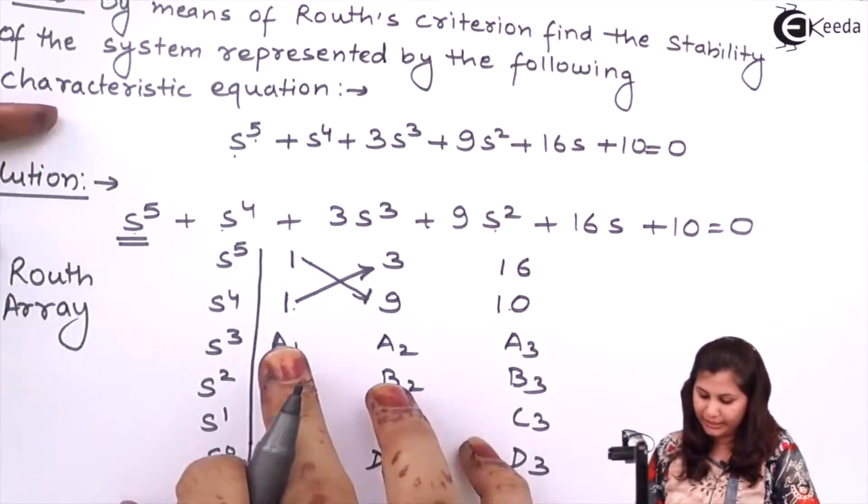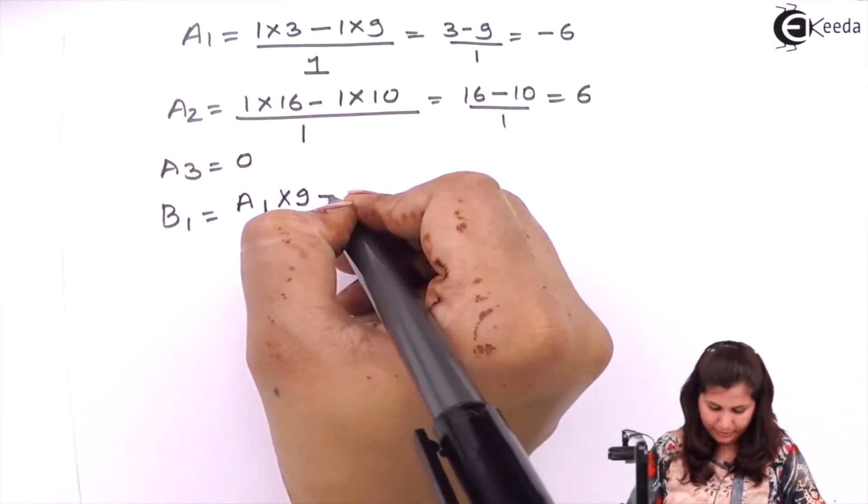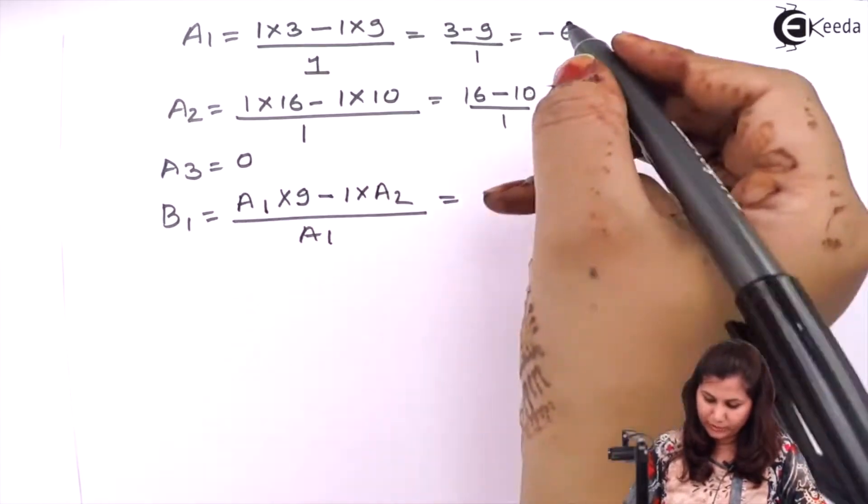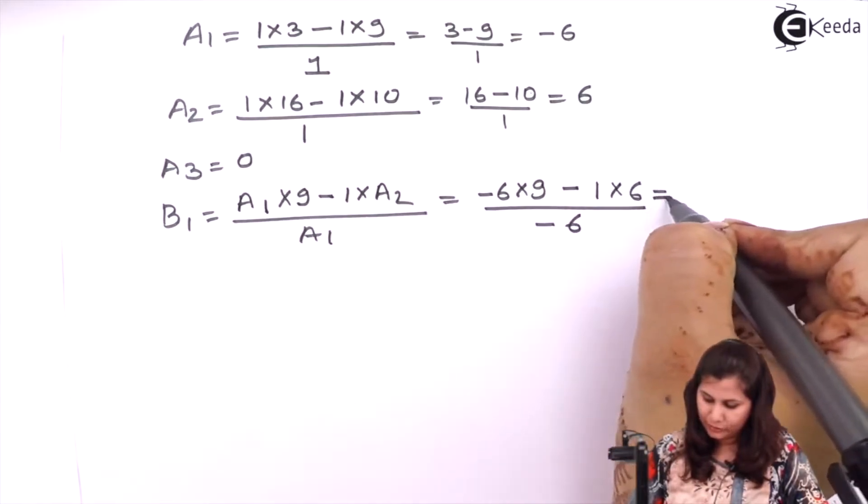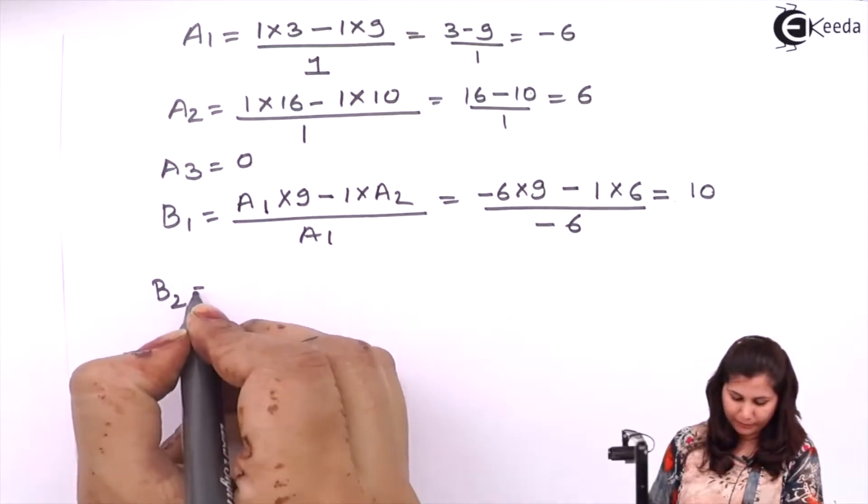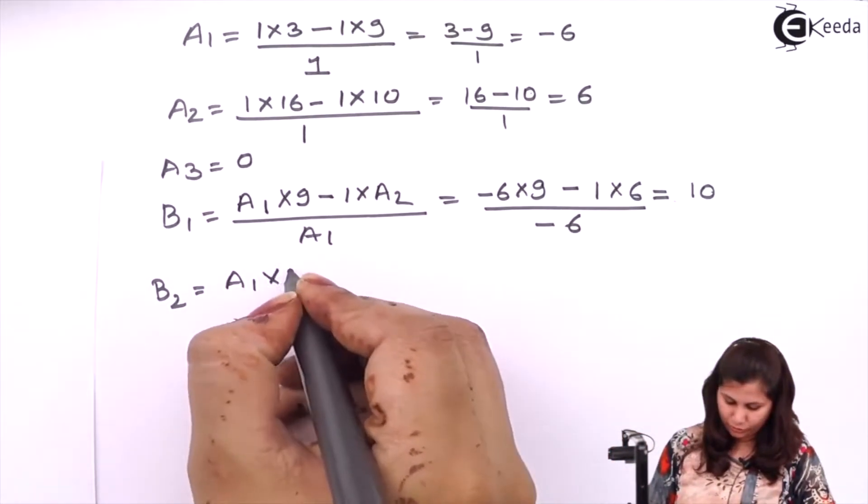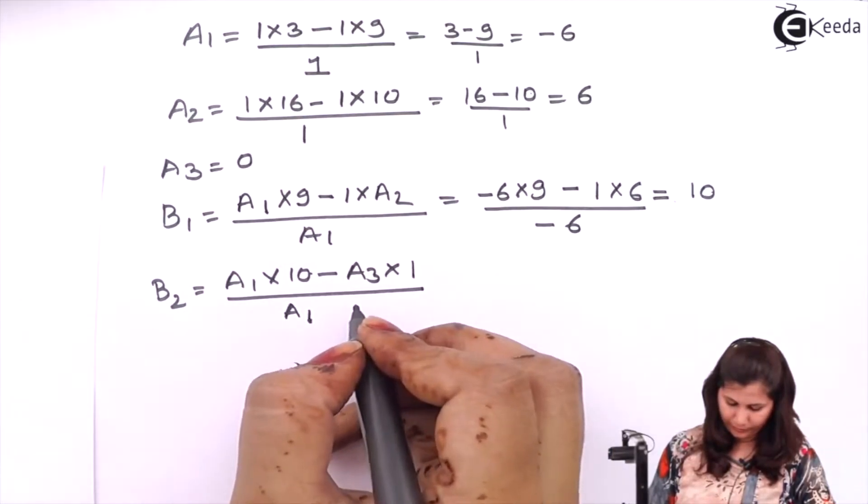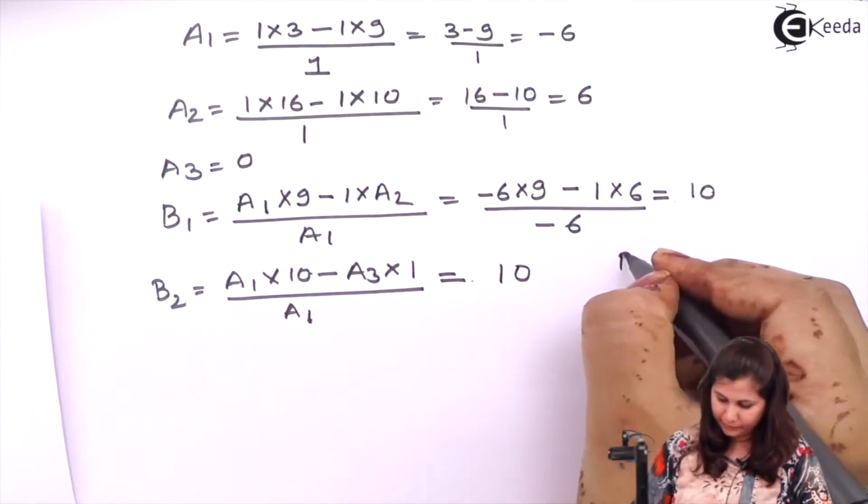Now b1, b1 will be a1 into 9 minus a2 into 1 upon a1. So a1 is minus 6, so minus 6 into 9 minus 1 into a2 is 6 upon a1 is minus 6. So it will be 10. Then b2, b2 will be a1 into 10 minus a3 into 1 upon a1. When you solve this, you will get the value of b2 as 10. b3 will be equals to 0.